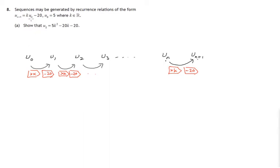Let's look at the particulars. u_0 is 5. To get to u_1, we multiply u_0 by k and subtract 20. But we know what u_0 is, it's 5. So we've got 5k minus 20, and now we know an expression for u_1.